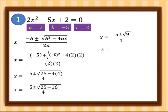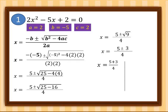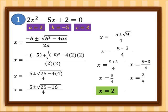So x = (5 ± √9) / 4 = (5 ± 3) / 4. Separating the plus and minus: x = (5 + 3)/4 = 8/4 = 2, and x = (5 − 3)/4 = 2/4 = 1/2. So the roots of our quadratic equation are 2 and 1/2.